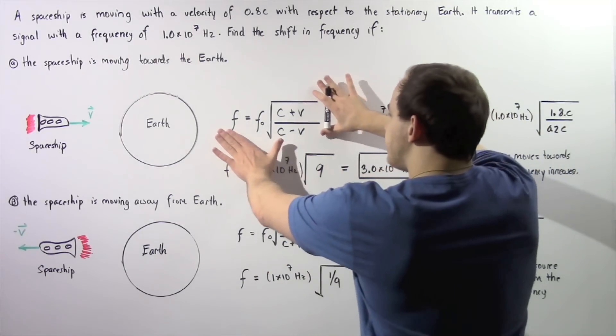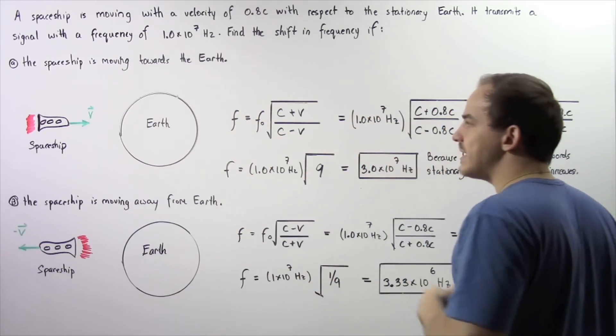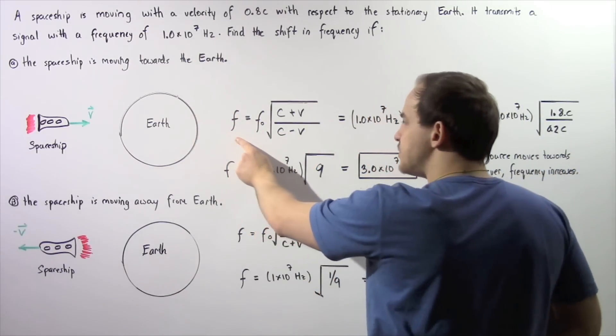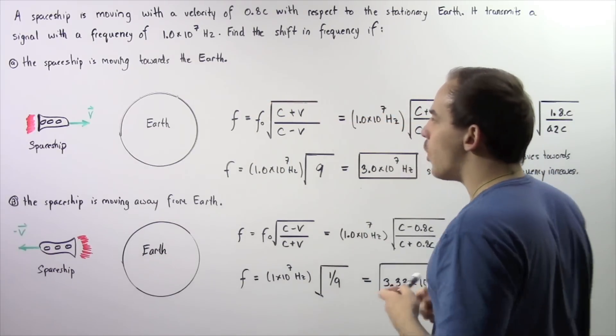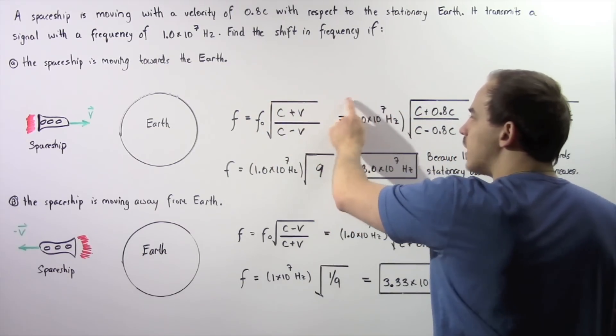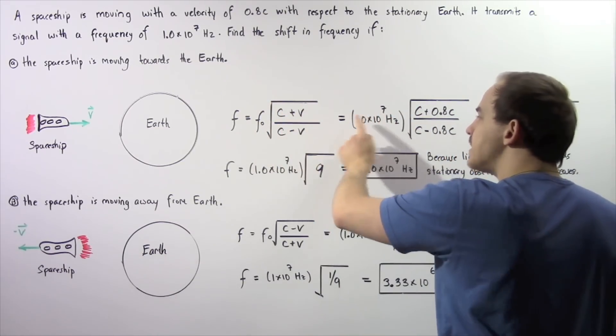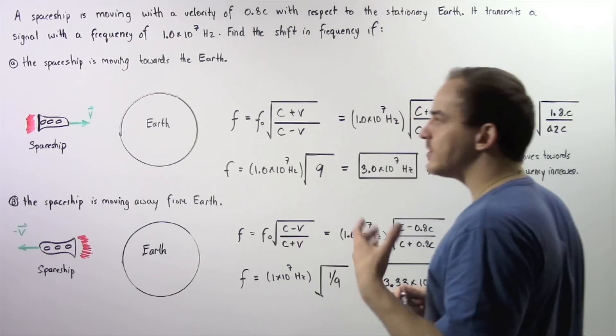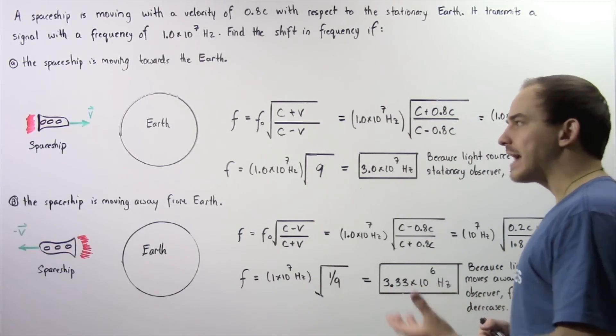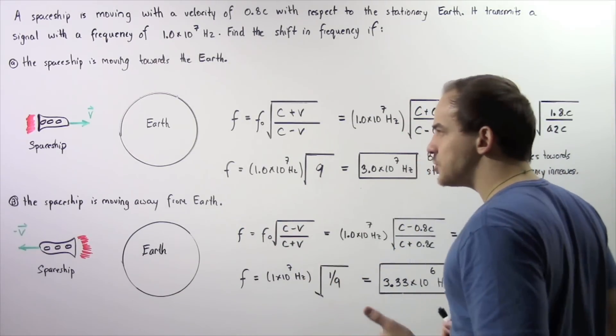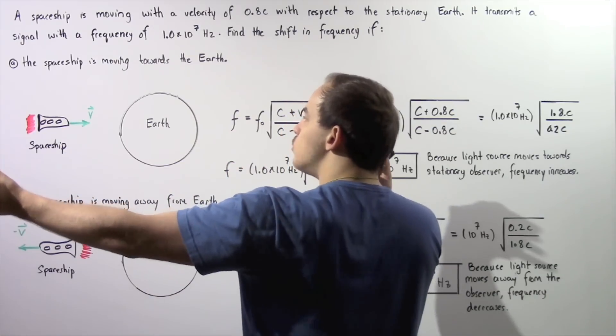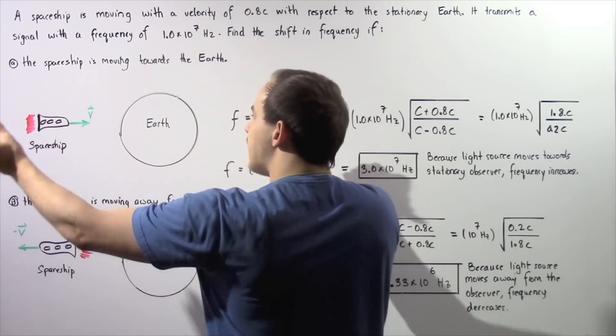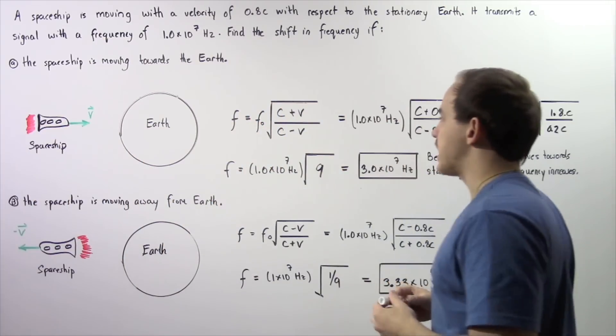Let's look at the following equation that we're going to use to solve our problem. The new frequency f is equal to f0 multiplied by the square root of c plus v divided by c minus v. This equation represents the Doppler effect of electromagnetic radiation when our two objects are moving towards one another.